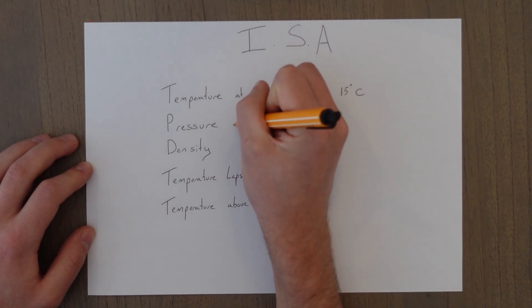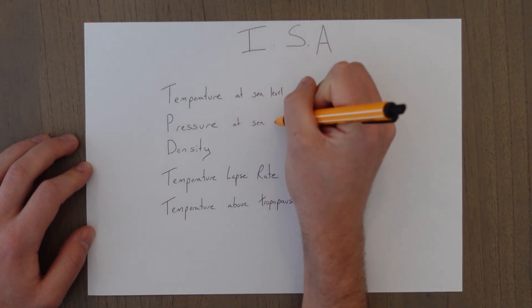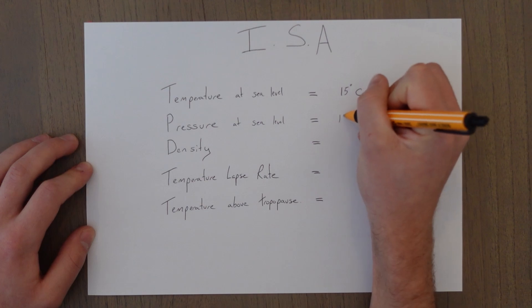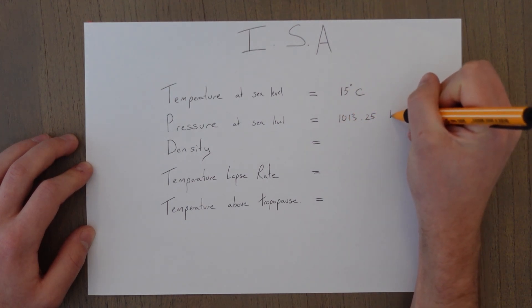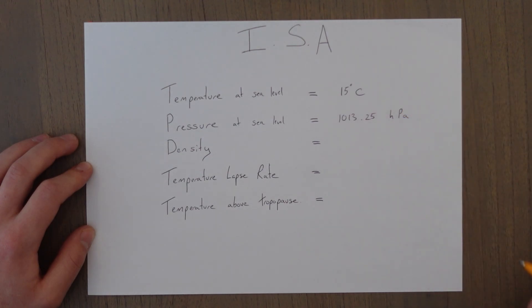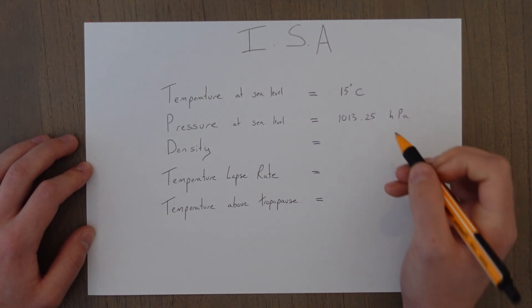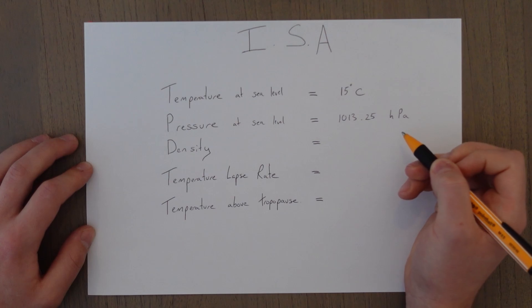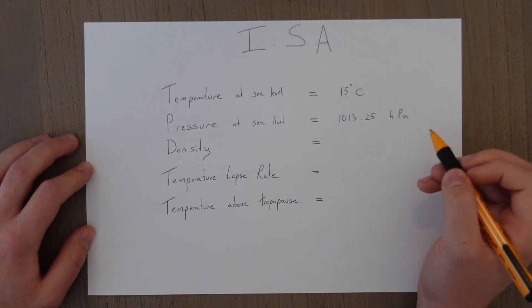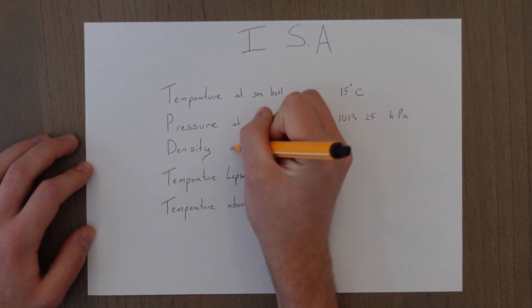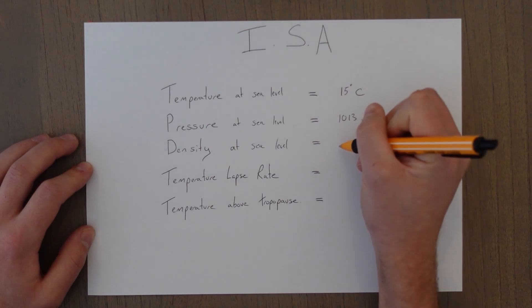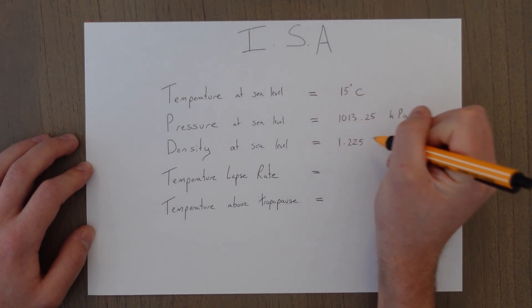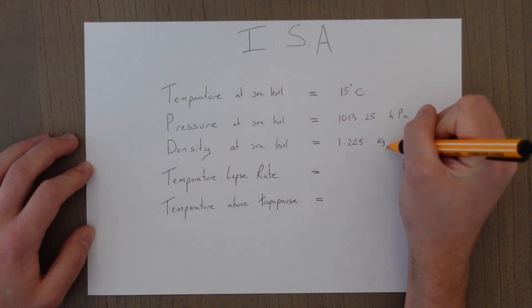We consider the temperature at sea level to be 15 degrees Celsius. Pressure also at sea level we consider to be 1013.25 hectopascals. Hecto just being the prefix and pascals are newtons per meter squared. Density also at sea level is considered to be 1.225 kilograms per meter cubed.